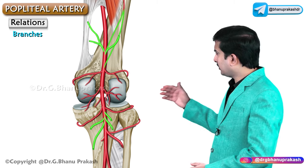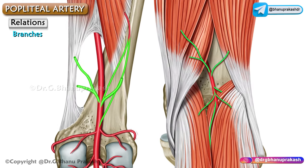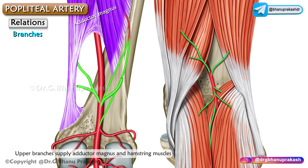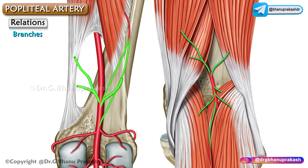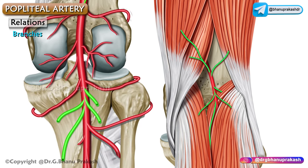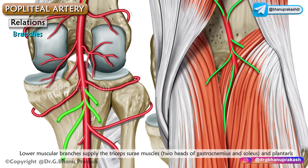The muscular branches are large and several in number. The upper branches supply the adductor magnus as well as hamstring muscles, and one or two of them anastomose with the fourth perforating artery. The lower muscular branches supply the triceps surae muscles — the two heads of gastrocnemius, soleus, as well as plantaris muscles.